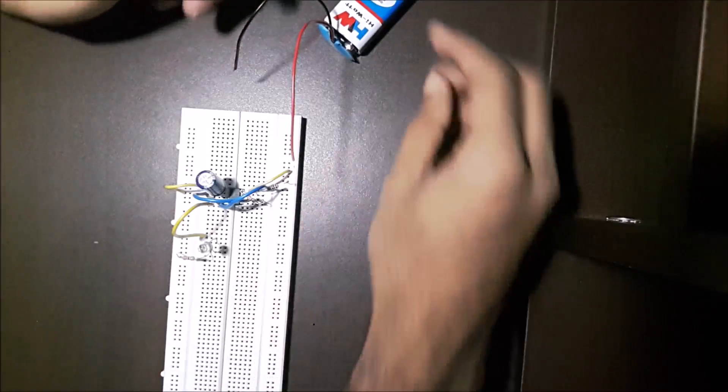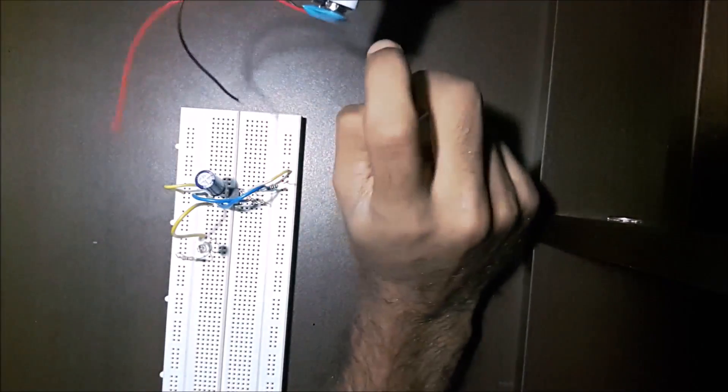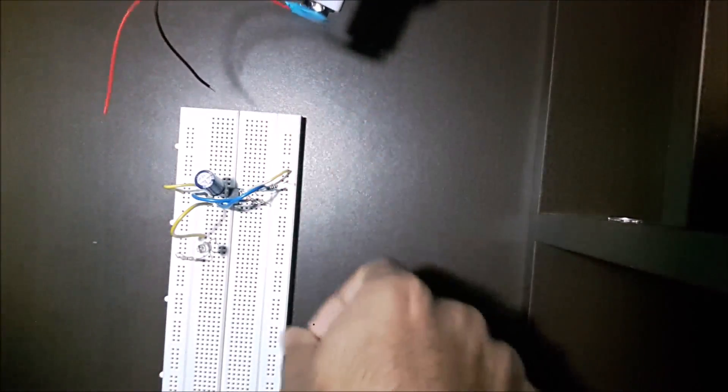Now finally connect the battery to the circuit. The positive one will go to this strip.